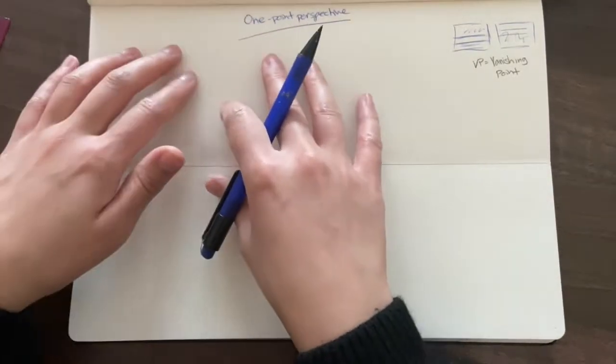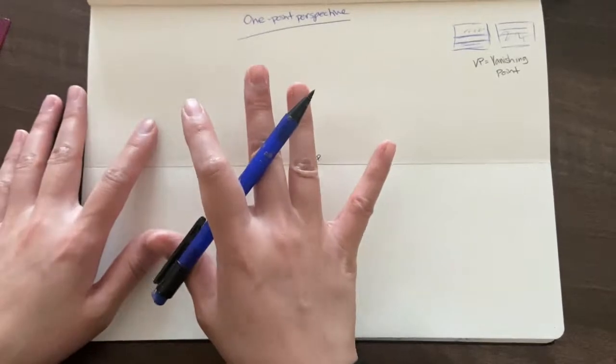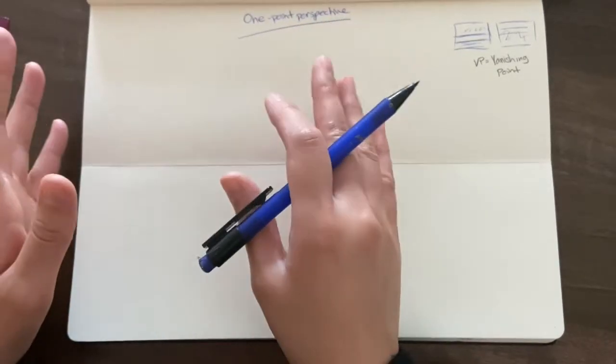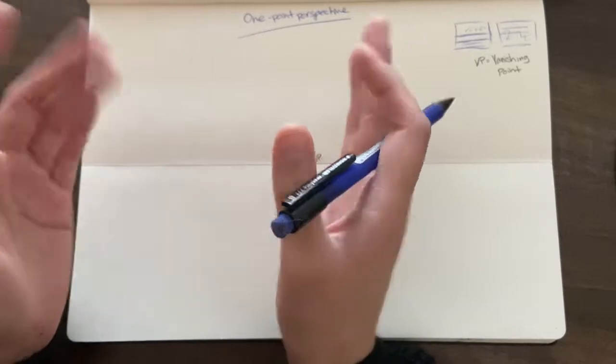Now, the first thing when you're drawing a cube, you always draw the front-facing shape first. So the front face of a cube is obviously a square.